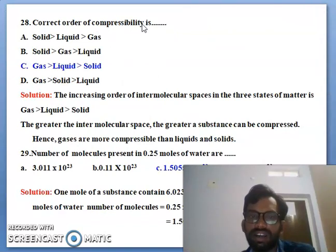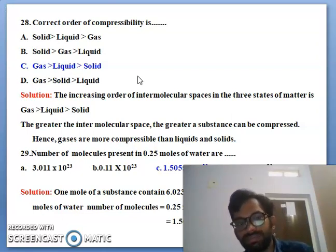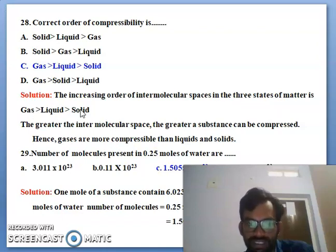You can see the 28th. The correct order of compressibility is gas, liquid and solid. So the increasing order of intermolecular space in these three states of matter is gas, liquid and solid. So greater number of intermolecular spaces, greater substance can be compressed. Hence the gas is more compressible than liquid and solid.